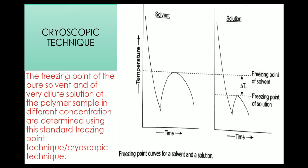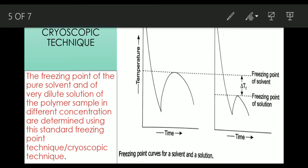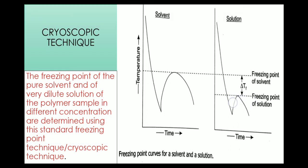Then we add a small amount of non-volatile solute and do the same procedure, and the graph is plotted. The temperature first decreases, then at a point it starts increasing, reaches a maximum value, and then falls down. This maximum temperature obtained is the freezing point of the solution. The temperature difference between the freezing point of the pure solvent and that of the solution is known as depression in the freezing point, i.e. delta Tf.